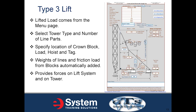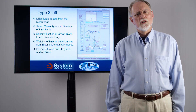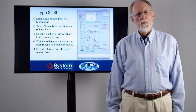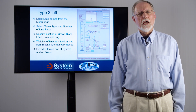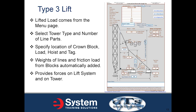For Type 3, the real difference is that there is now a heel block. The lifted load comes from the menu page. You select the tower type and the number of line parts, specify the location of the crown block, and the load and tag hoist as well. The weights of the lines and friction from the blocks are automatically added, and the forces are shown on both the lift system and the tower.